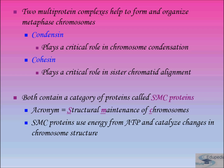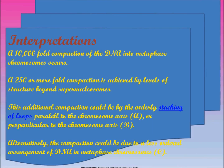Both condensin and cohesin contain a category of protein called SMC proteins — Structural Maintenance of Chromosomes. SMC proteins use energy from ATP (adenosine triphosphate) and catalyze changes in chromosome structure. A 10,000-fold compaction of the DNA into the metaphase chromosome occurs. A 250-fold or more compaction is achieved by the level of structure beyond supernucleosomes. This additional compaction could be by the orderly stacking of loops parallel to the chromosome axis (alpha), or perpendicular to the chromosomal axis (beta), or alternatively due to a less ordered arrangement of DNA in the metaphase chromosome (C).